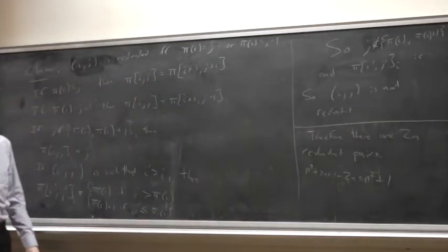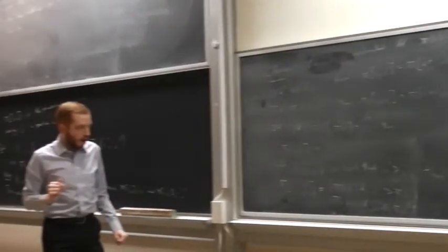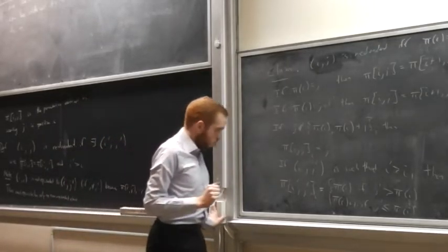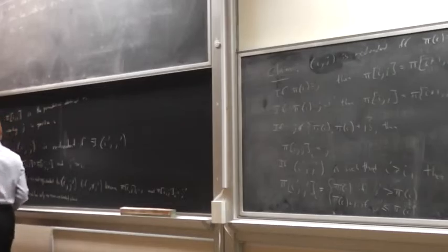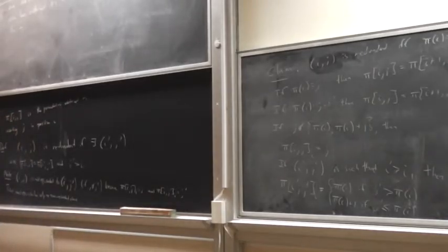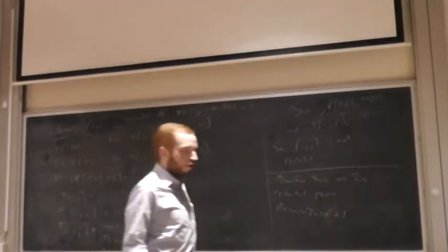This is a nice answer in some sense: it tells you how many ways there are to insert an element into a permutation, and it didn't really matter what the permutation was. Of course the specific redundant positions depended on π, but the count didn't. That situation is about to change — and this is what makes the problem interesting and hard.